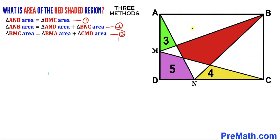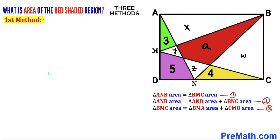Let's label the individual regions. The red shaded region is labeled lowercase a, the white regions are x and w, and the other regions are y and z.